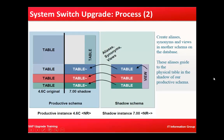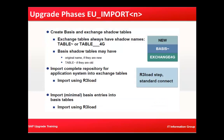In the shadow instance, aliases, synonyms, and views are created for the existing tables. This is your shadow schema. In the production schema, for each existing table, either an alias, synonym, or view is created. These aliases point to the physical table in the shadow or production schema. That covers the table creation part.